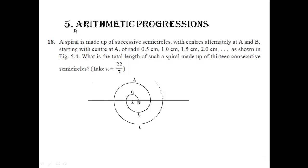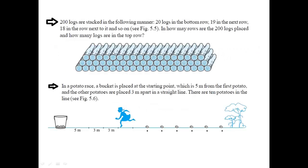Now chapter number 5 — arithmetic progression. Generally for normal sums they are going to make by their own, so we just have to remember the concept. But for word problems, generally they are asking word problems like the examples I am giving you. You can use all this type of sums from any of the books. The spiral question is one of the most important questions — many times they are asking this one. These questions are from the textbook only.